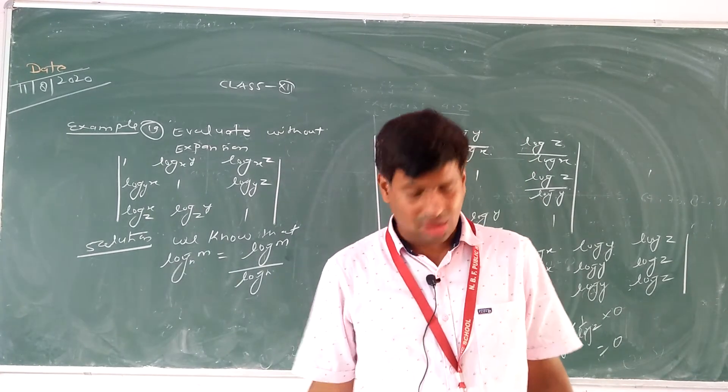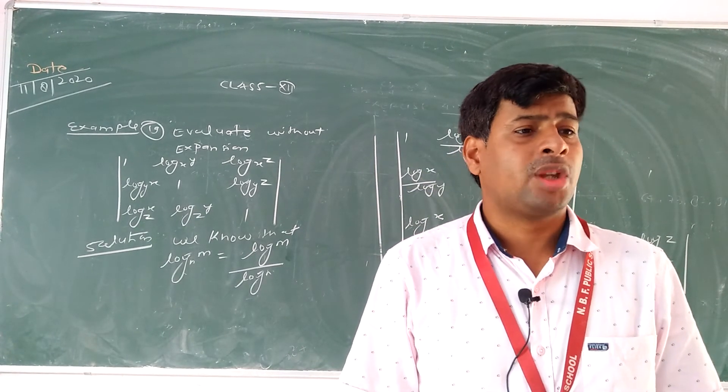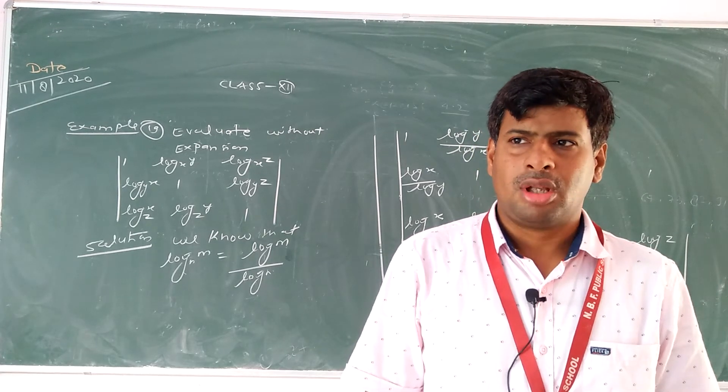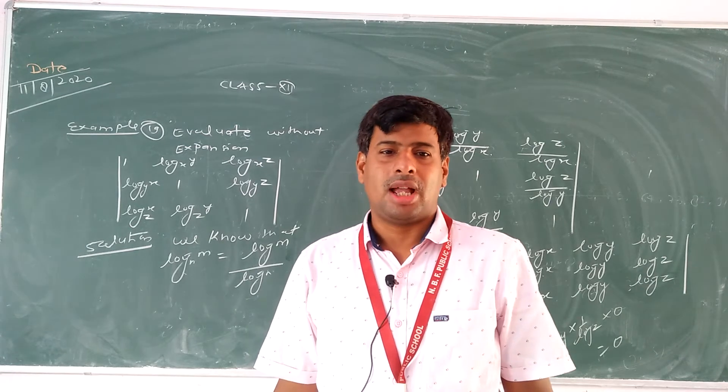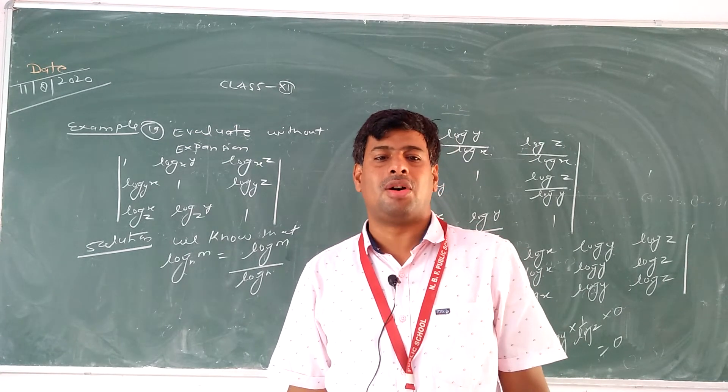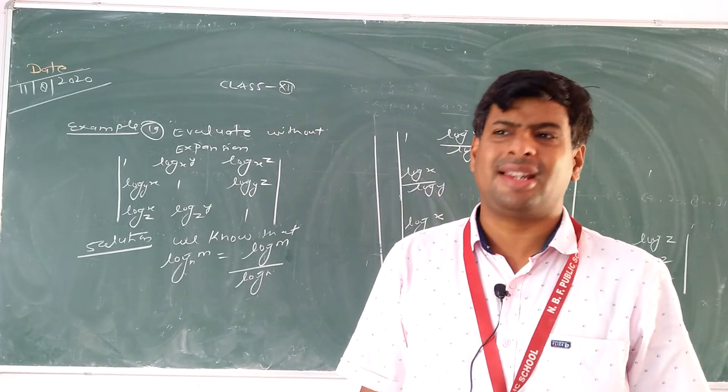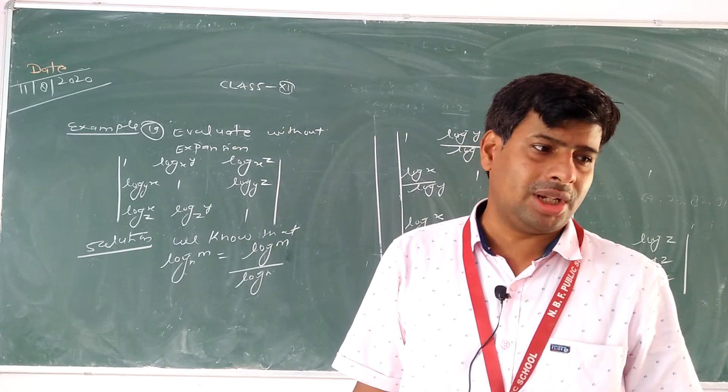From students of class 12 you can understand that if what is given without using expansion, we can use only properties. And maximum chances, the answer of this question will be zero.